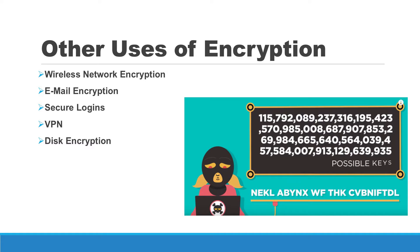There are other ways that we can use encryption, some of which we'll get into much more detail as we enter our discussion in our next unit about networks. Wireless network encryption, email encryption, secure logins, VPN, and disk encryption are all ways that we can implement encryption as part of our security plan.